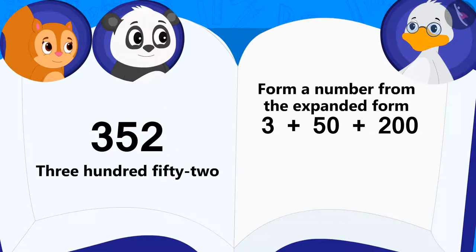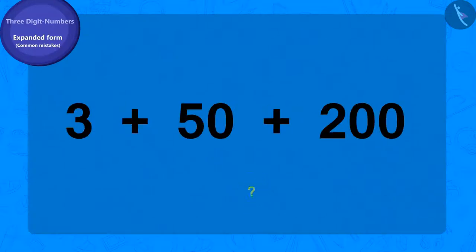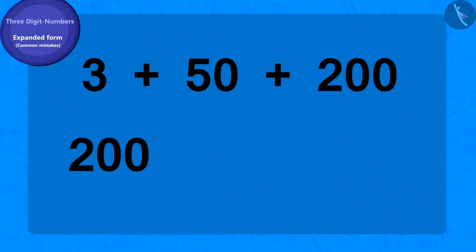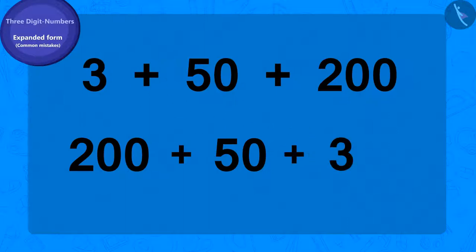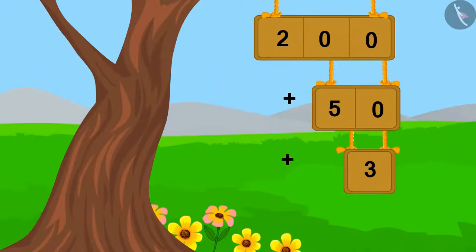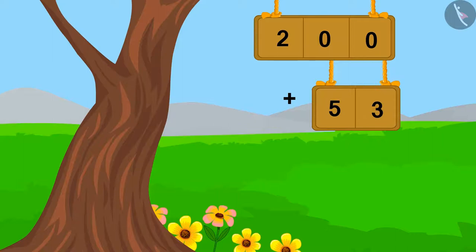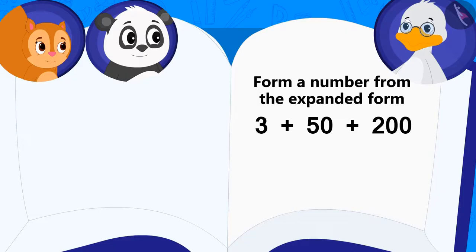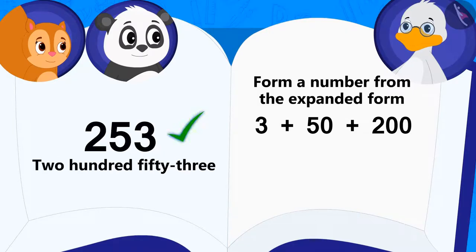Uncle said to Chanda: do you know the correct answer? Come, let's solve this riddle together. Children, we always write the expanded form beginning with three-digit numbers, followed by two-digit numbers, and in the end we write the one-digit number. So we will write this expanded form in the correct order. First we add 50 and 3, which becomes 53. Now we add 53 to 200, giving us 253. So the answer to uncle's riddle is 253.